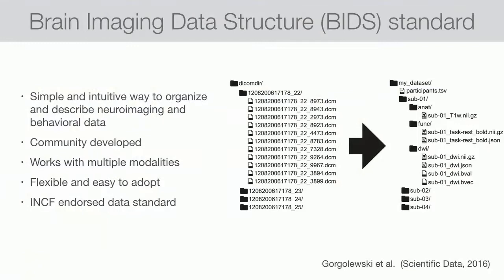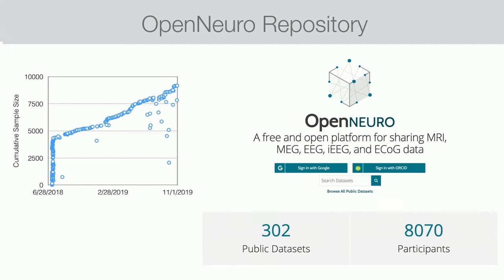About three years ago, an open science community out of Stanford proposed our first international data standard, known as BIDS — Brain Imaging Data Structure Standard. It's a simple and intuitive way to organize your neuroimaging and behavioral files. The idea is that you should be able to hand your data set to somebody without saying a word, and they know everything they need to know about your study — 100% shareable. It follows all international neuroinformatics standards, it's flexible and easy to adopt, and works with multiple modalities.